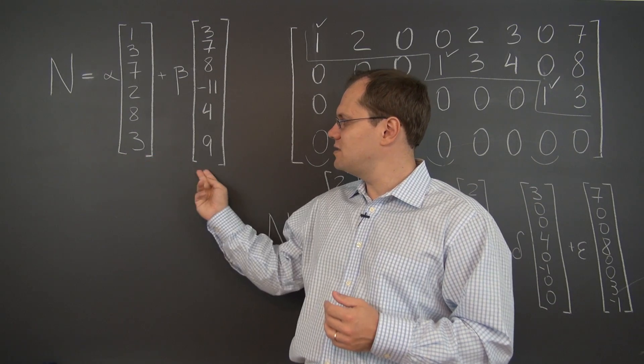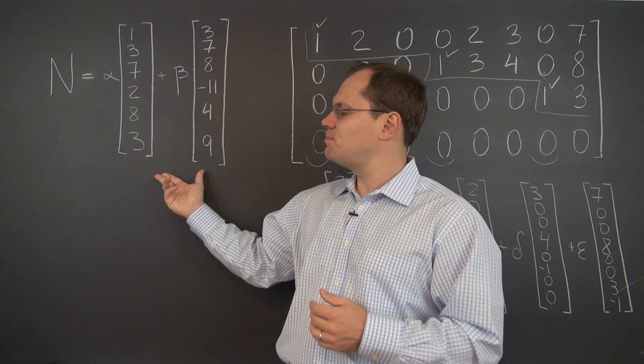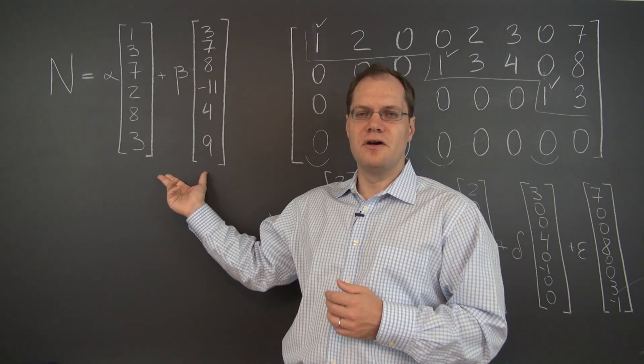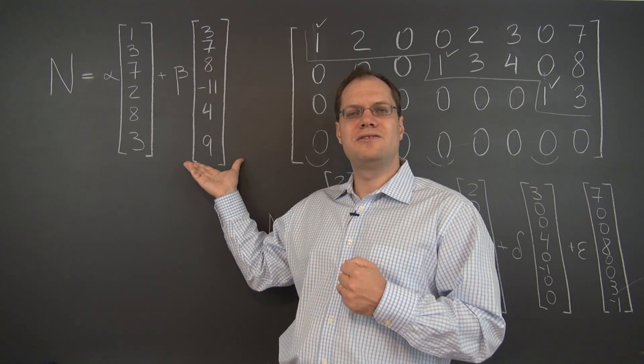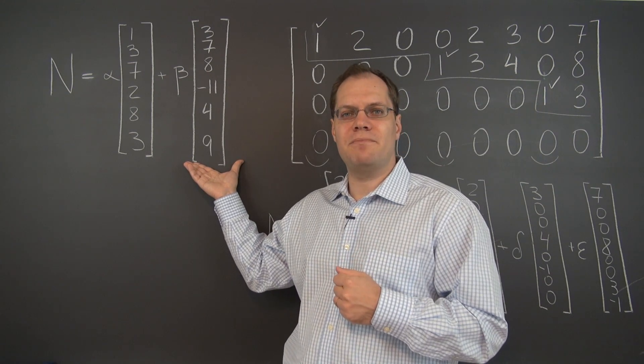we just have to indicate what its basis is. And this clearly specifies that these two vectors form the basis and that the null space is the span of these two vectors. So this is a perfectly legitimate way to specify a vector space: to say it's the null space of some matrix.